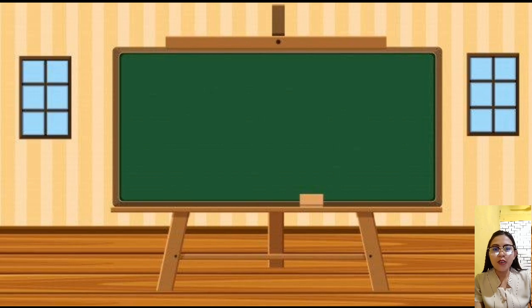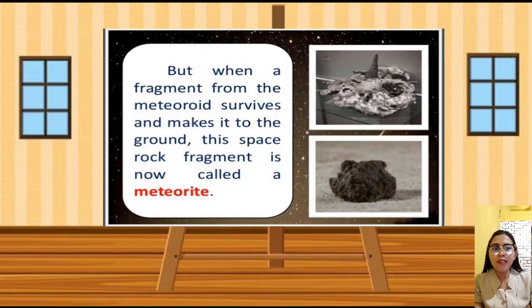A meteor is also called a shooting star. But the truth is, a meteor is not a star at all. But when a rock fragment from the meteoroid survives and makes it to the ground, this space rock fragment is now called a meteorite.